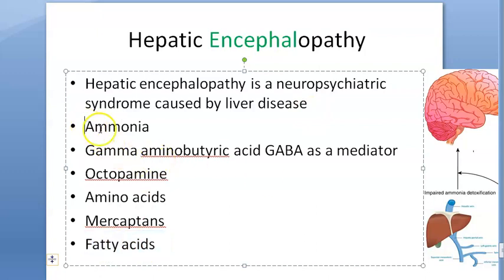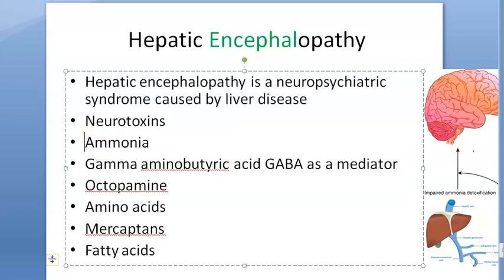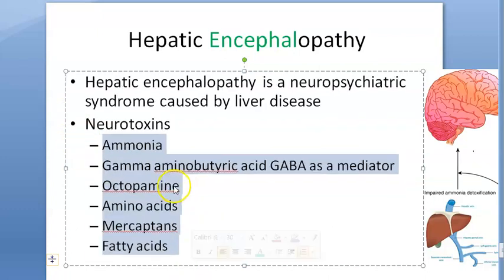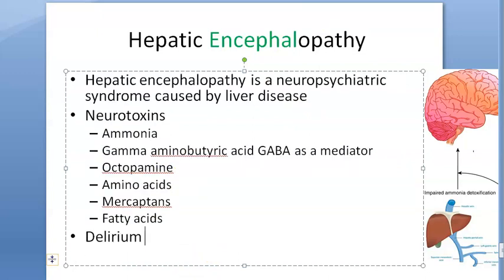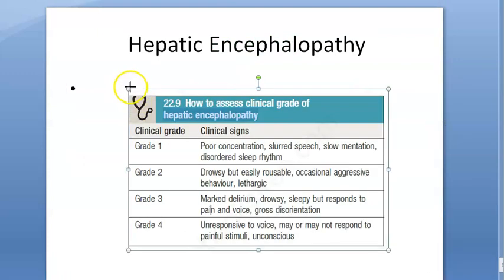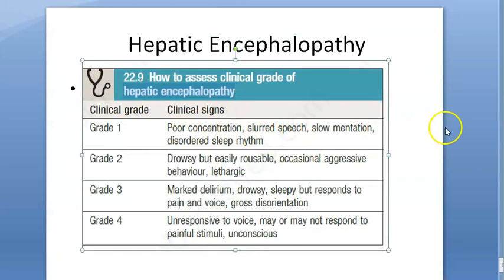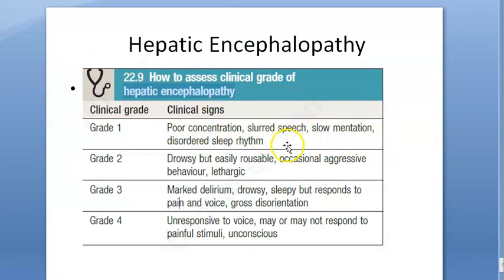What will the symptoms in these people be? They include delirium and coma. You can see the progression here. Grade 1: poor concentration, slurred speech, slow mentation, and disordered sleep rhythm.